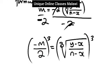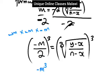We raise negative m to the power of 3. Negative m times negative m times negative m — negative times negative is positive, times negative gives negative — so that's negative m cubed, which is m to the power 3.